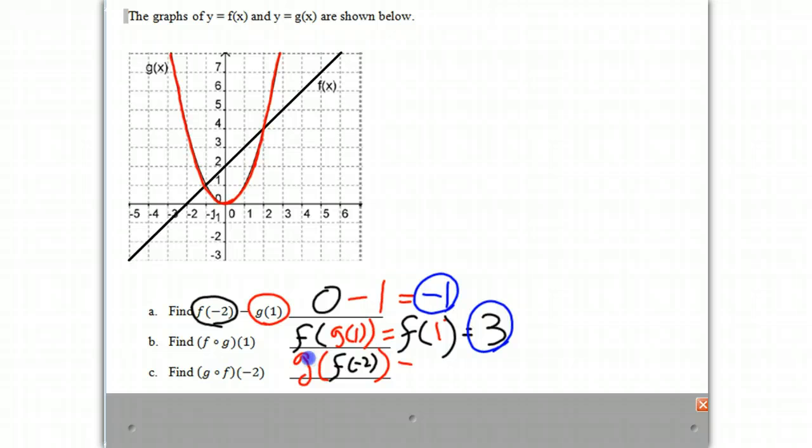And now we have to evaluate f of negative 2. Well, f of negative 2, if we go over on our graph, when x is negative 2, y is 0. We've done that one already. And so this becomes g of 0.